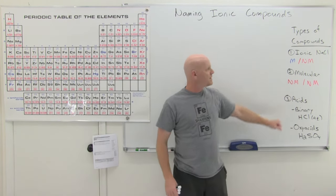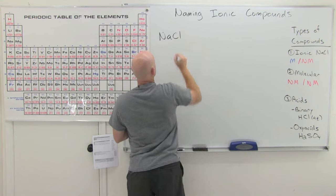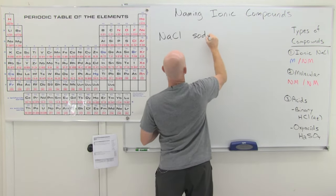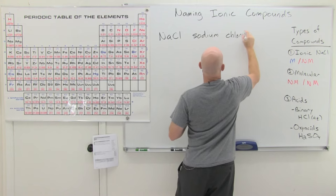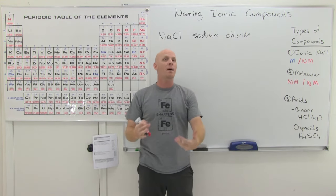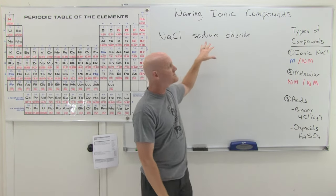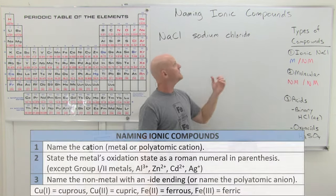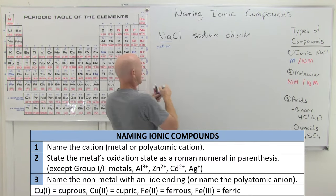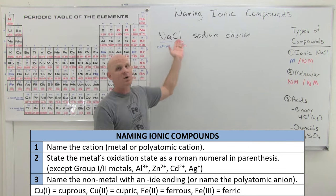Now that we've learned how to distinguish between types of compounds, we'll name ionic compounds starting with that most famous example. When you name an ionic compound, you name the cation first and the anion second — that's always the order. What's nice is that in formulas we also write them in that order: cation first, anion second, or metal first then non-metal.